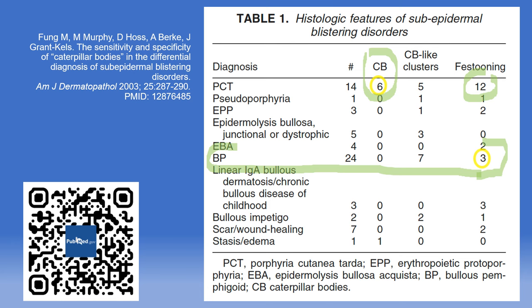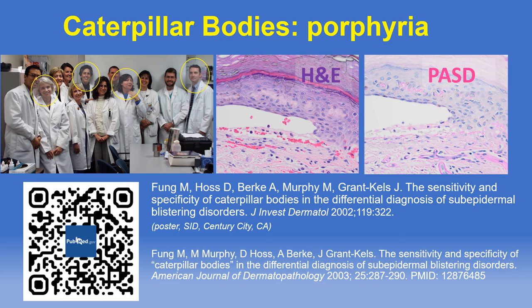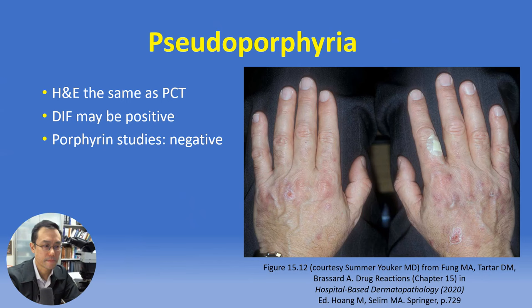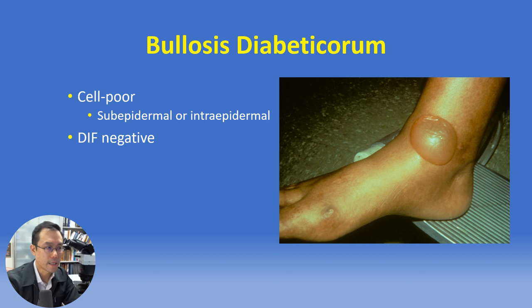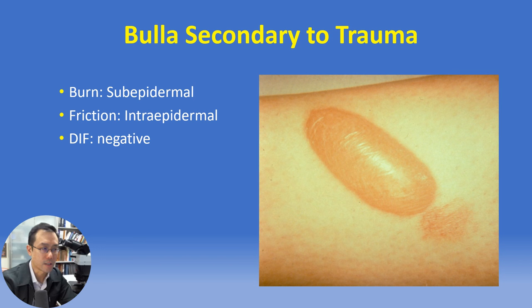Pseudoporphyria by H&E and sometimes even by DIF is indistinguishable from PCT, so clinical correlation and porphyrin studies may be required. The differential diagnosis for a cell-poor subepidermal blister may also include bullosis diabeticorum, where DIF will be negative and sometimes the cleavage plane is intraepidermal. A traumatic bulla secondary to a burn or extreme heat typically shows a subepidermal split with overlying confluent necrosis; a friction blister is typically intraepidermal. DIF is negative in traumatic bulla.